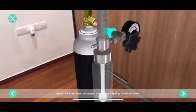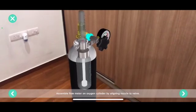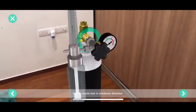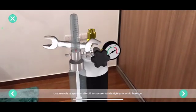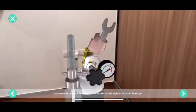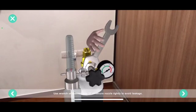Assemble the flow meter on the oxygen cylinder by aligning the nozzle to the valve. Rotate the nozzle bolt in a clockwise direction. Use a wrench or spanner size 27 to secure the nozzle tightly to avoid leakage.